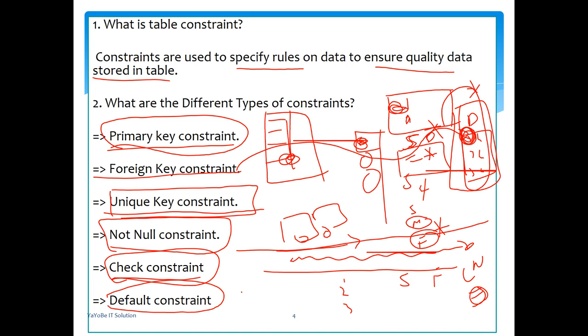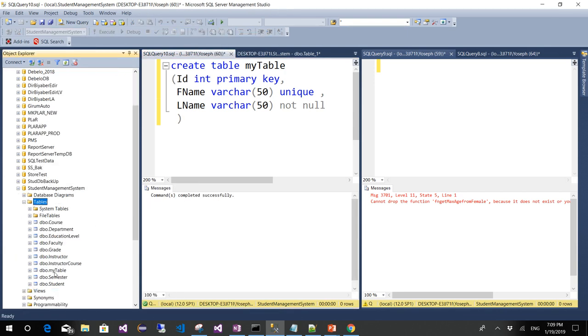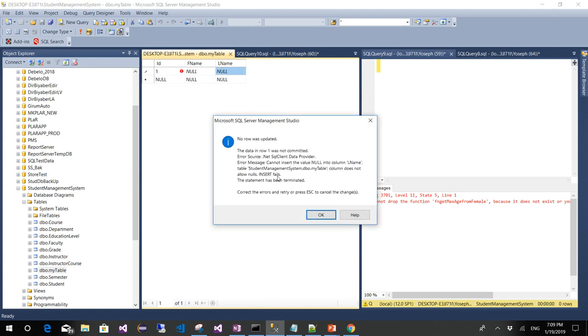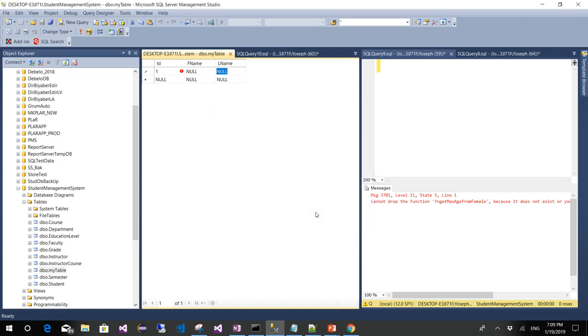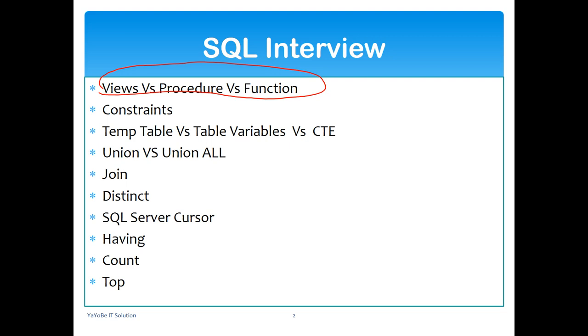Therefore, constraint is nothing but a specific rule on data to ensure quality data is stored in the table. This ensures quality data. For example, first name being unique ensures data quality. We can create a student table and look at data in the table with first name, last name, and other fields with appropriate constraints defined.